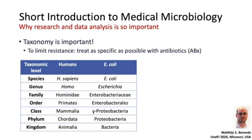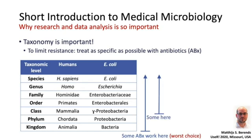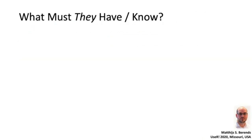Taxonomy is important because we need to limit the development of resistance. The goal for doctors treating with antibiotics is always to treat as specifically as possible. Some antibiotics work broadly — they are broad spectrum, which is actually the worst choice, though sometimes you don't have a choice. But some antibiotics work at a family level, which is already better, and some work at the species level — that would be the best choice. So how do you know which antibiotics to give for your ward, your hospital, or your region?